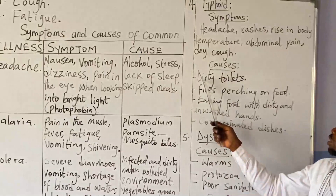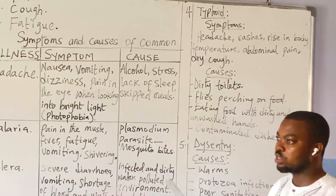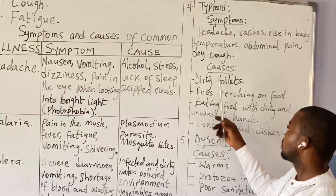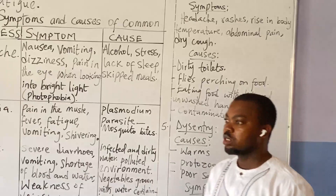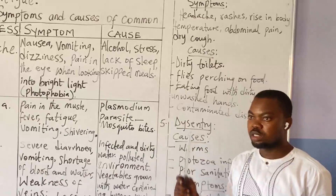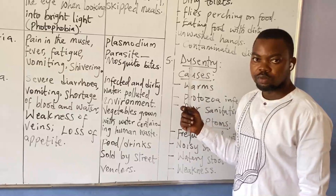What are the causes of this typhoid? Dirty toilets. Flies perching on food — if you allow flies to perch on your food, they will transmit dirty bacteria on it and that can cause typhoid. We have eating food with dirty and unwashed hands. Contaminated dishes — spoons, forks, plates — if they are contaminated, you can easily get typhoid.